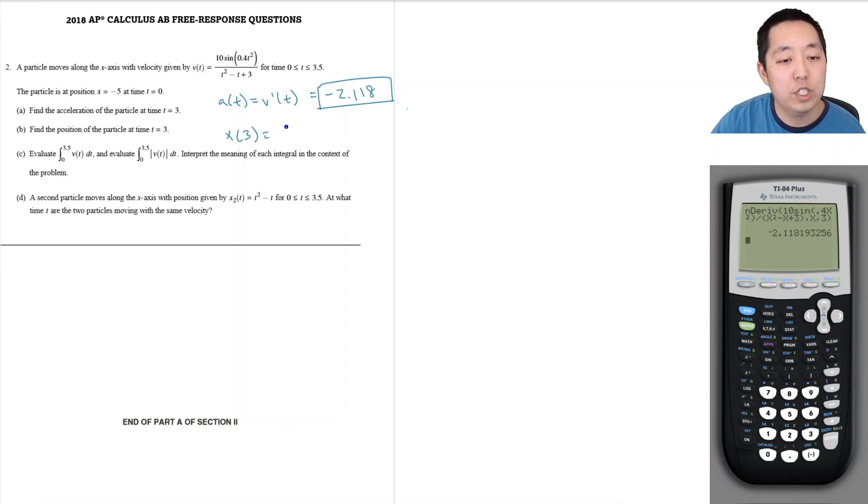So the position is the change, is the integral, is the displacement change in displacement of v of t dt. But then it has an initial position at negative 5 so I got to do minus 5. Okay, because that's the initial position.